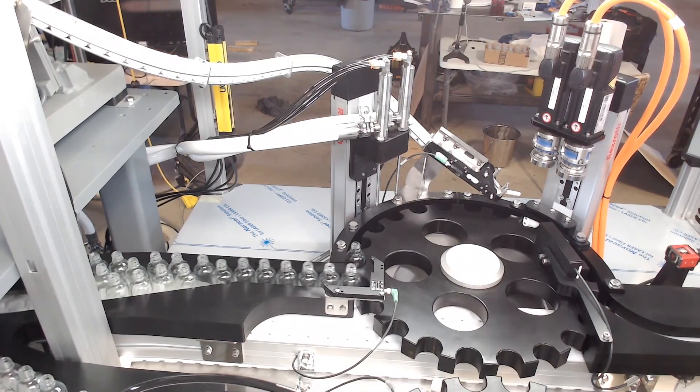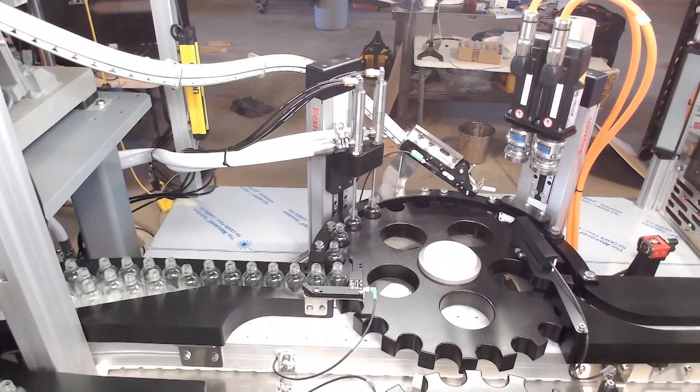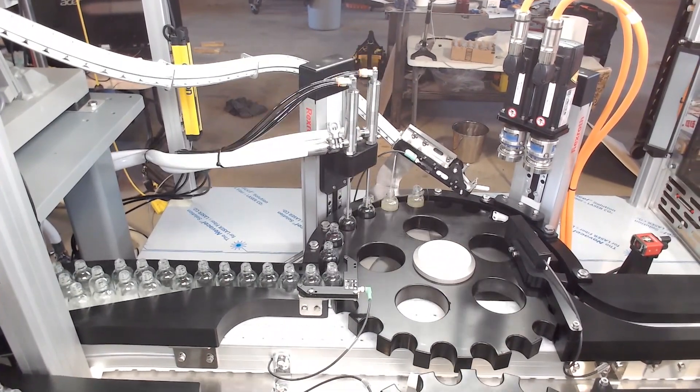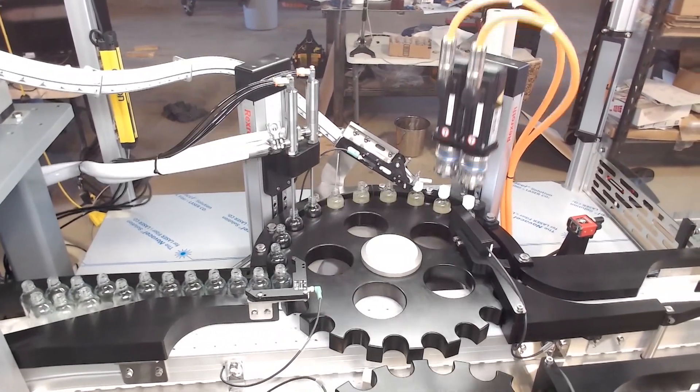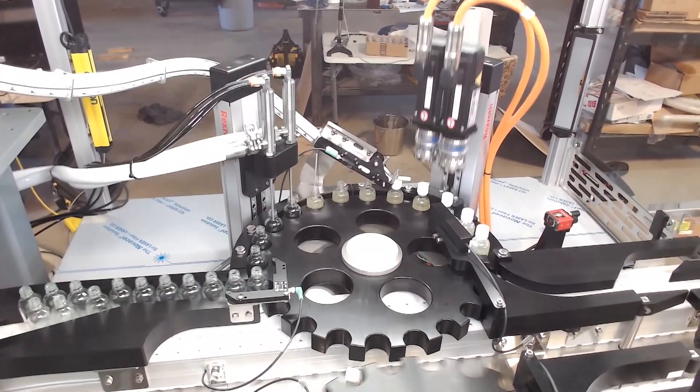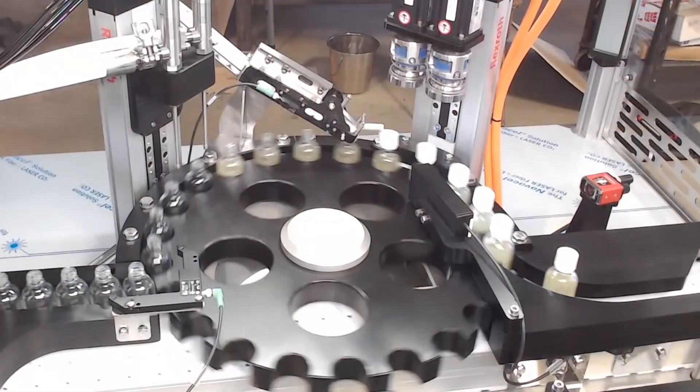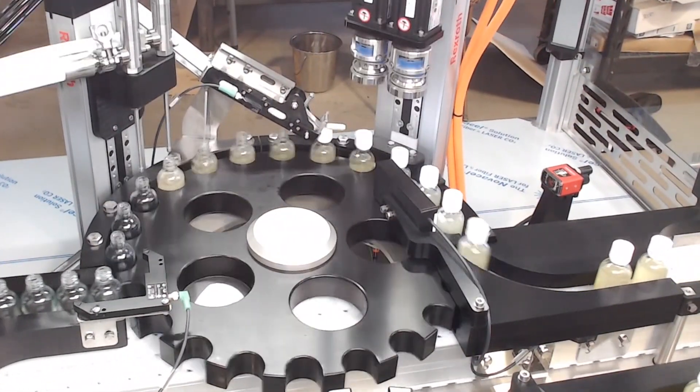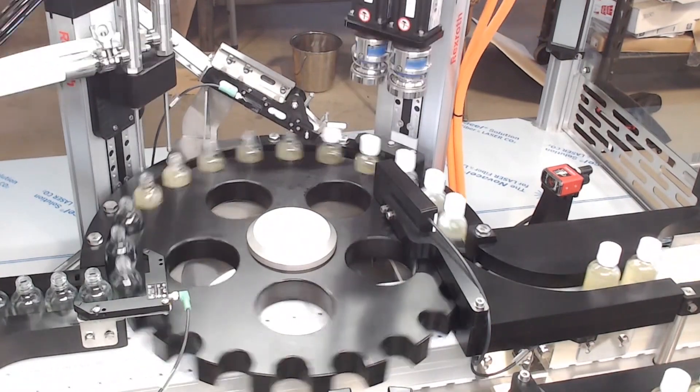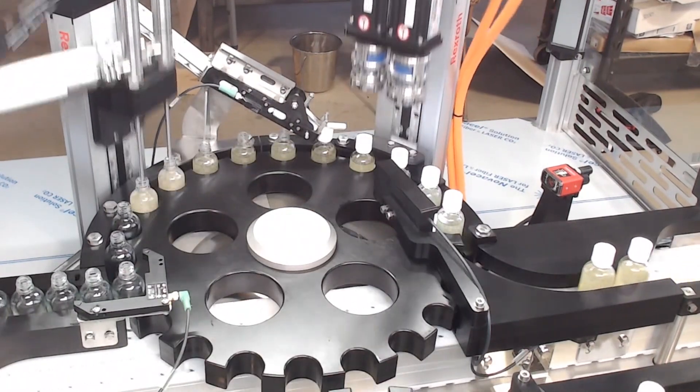The second part here is the bottle filling, capping, and machine vision inspection. You can see the bottles being filled up, and then the caps are being retrieved and screwed on. On the right side, you'll notice the Omron Microscan machine vision system. That's doing a fill level detection and also verifying that the cap is on properly.